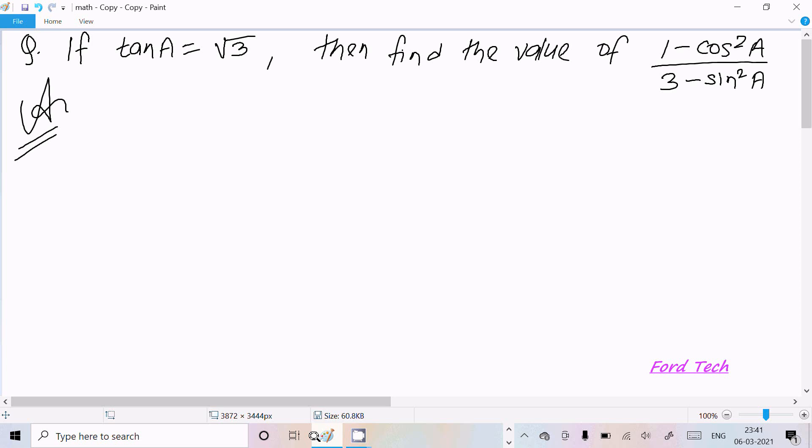Hello friends, in this video lecture I am going to find the value of (1 - cos²A) / (3 - sin²A). The given is tanA = √3. This is an important question that is asked in the metric 10th examination.